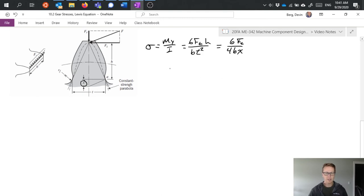That's just a step along the way to what we're doing. We define the Lewis form factor with the value lowercase y as equal to 2x over 3 times the pitch. Now our stress equation can be rewritten like this: t over b p y.